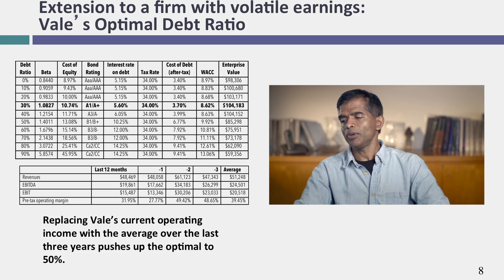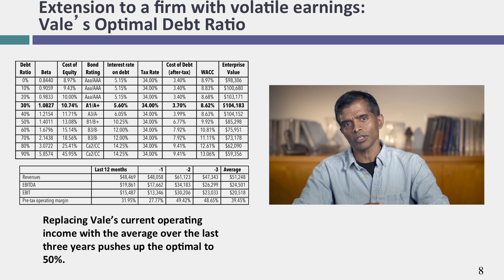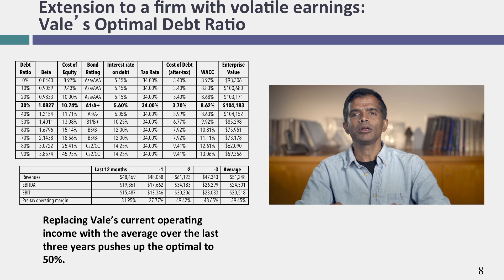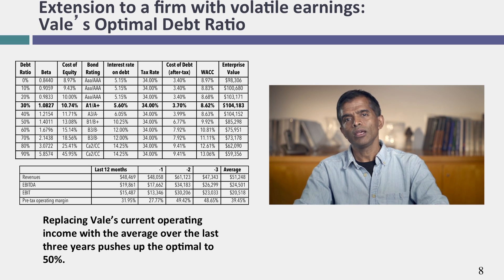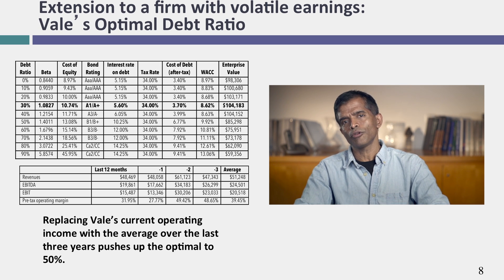I computed the optimal debt ratio for Vale to be about 30%, and it looks over-levered because its actual debt ratio exceeds 30%. But that's using 2013 operating income, and Vale is an iron ore company — 2013 was not a good year for commodity prices. If I normalize earnings by taking an average across the last three or four years and use that normalized income instead, the optimal debt ratio for Vale jumps to 50%.